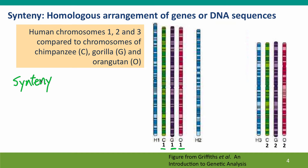Synteny is the homologous arrangement of genes or DNA sequences on homologous chromosomes. The whole chromosome need not be homologous for there to be synteny — synteny can also refer to just a segment of a chromosome that's homologous to a segment of a chromosome in another organism. We know they're homologous because the organization of the genes is so similar that it could not have arisen by chance; it must reflect common ancestry.